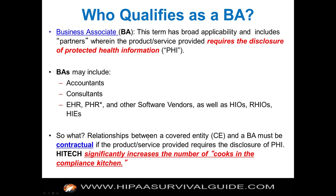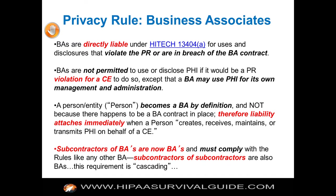BAs are directly liable under Section 13404A for uses and disclosures that violate the privacy rule or are in breach of the BA contract. You can't use or disclose PHI in a way that would be a privacy rule violation for the covered entity. BAs may use PHI for their own management and administration because otherwise you couldn't perform the business function the covered entity needs. Liability attaches immediately by operation of law — whether or not you have an agreement.